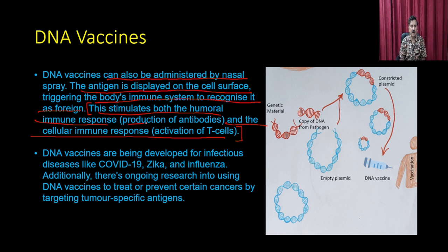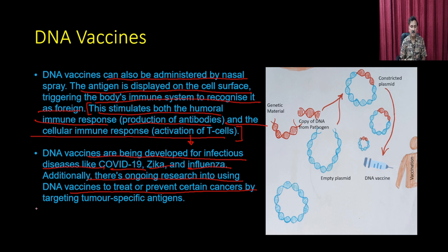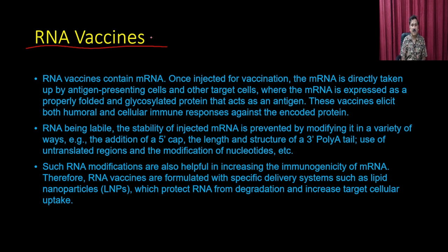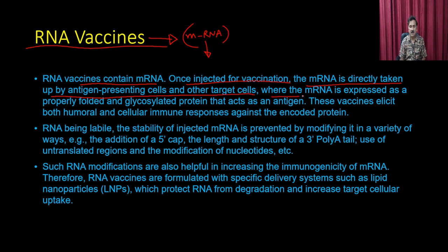RNA vaccines contain messenger RNA. When injected for vaccination, the messenger RNA is directly taken up by antigen-presenting cells and other target cells, where it is expressed as a properly folded and glycosylated protein that acts as an antigen, eliciting both humoral and cellular immunity. RNA being labile, the stability of injected messenger RNA is improved by modifications such as addition of a 5' cap, poly-A tail length, use of untranslated regions, and nucleotide modifications.